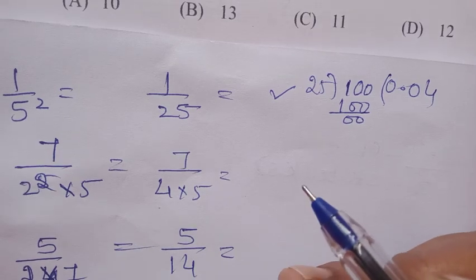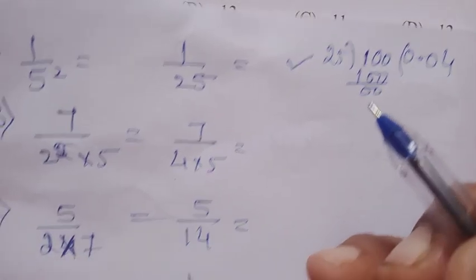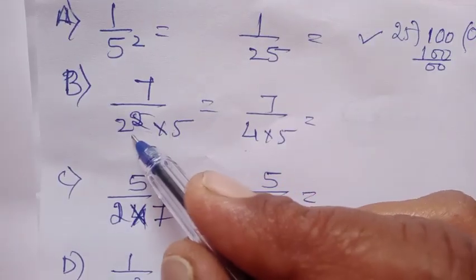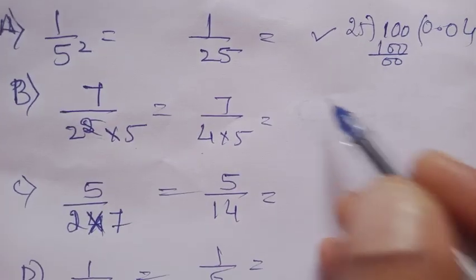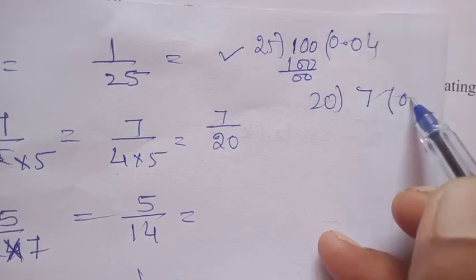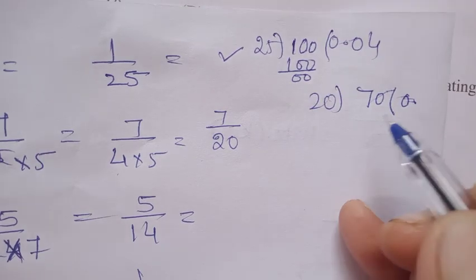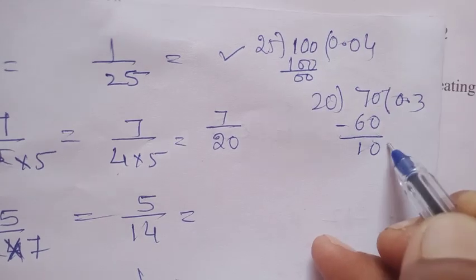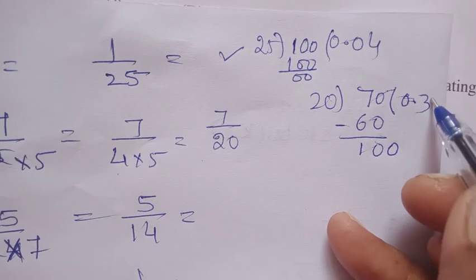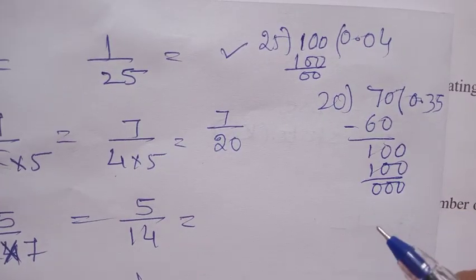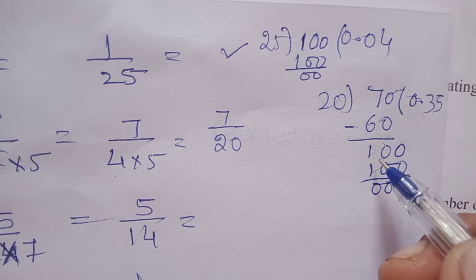Second option: 7 upon 2 squared times 5, that's 4 into 5, which is 20. So 7 upon 20. Divide 7 by 20. Simple division: 0 point, 3 into 60... 70 minus 60 is 10, then 100... 25 into 100. Here also the remainder becomes 0, so this is also not our option.